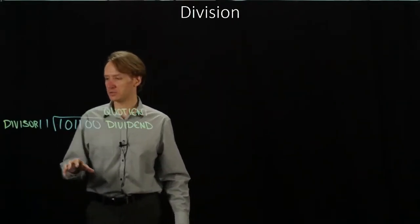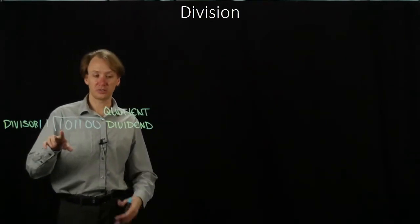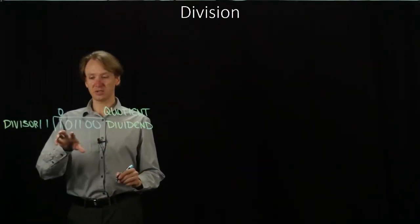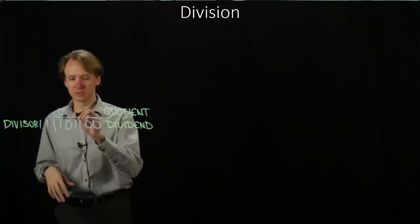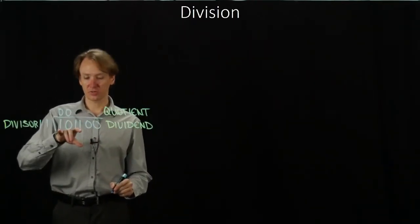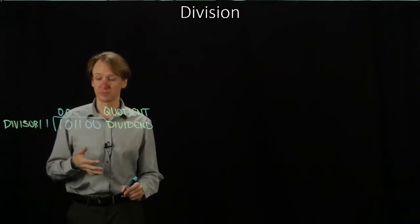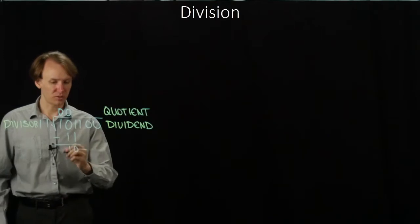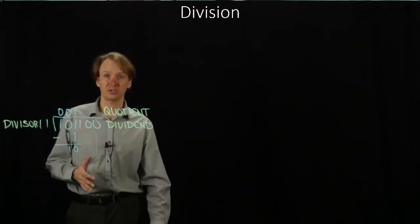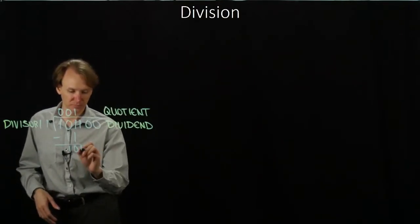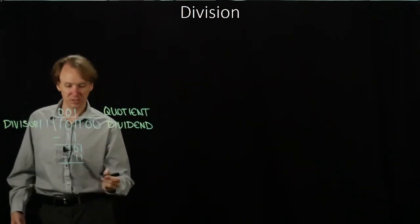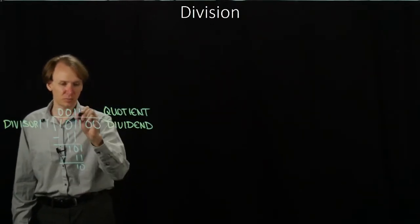A 2-bit divisor is not going to divide into a 1-bit dividend, so I'll have a 0 in this position. Once I have a 2-bit dividend, I might be able to divide a 2-bit divisor into it, but 10 is still smaller than 11, so I can't — I'll put a 0 there. Now that I have a 3-bit dividend, I can definitely divide a 2-bit divisor into it, so I'll subtract 11 from 101, which leaves me with 10, and I'll put a 1 in the quotient.